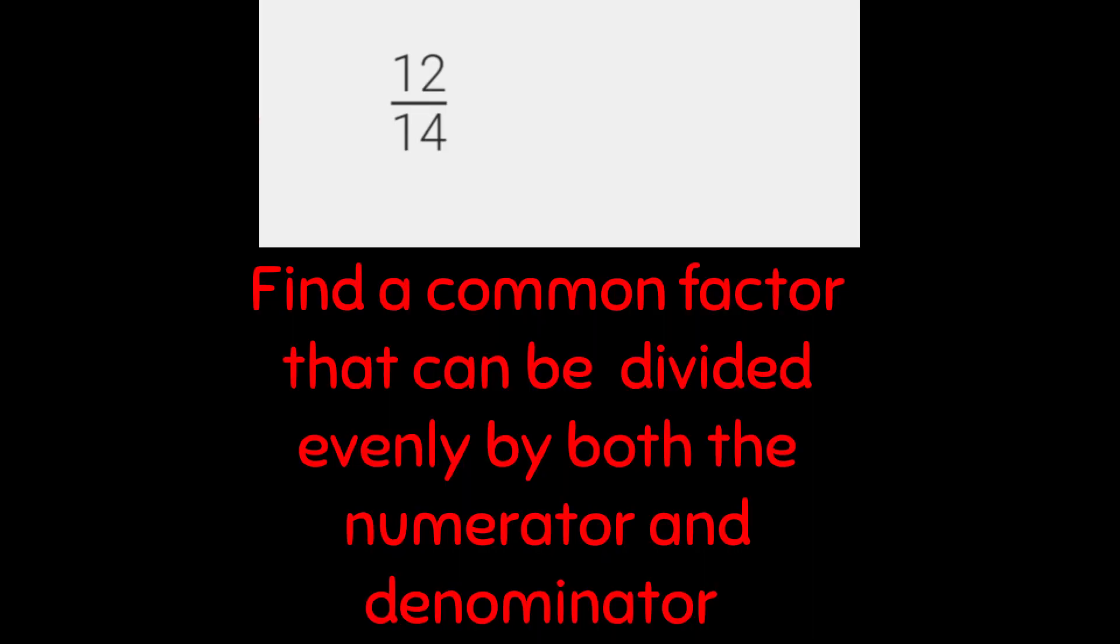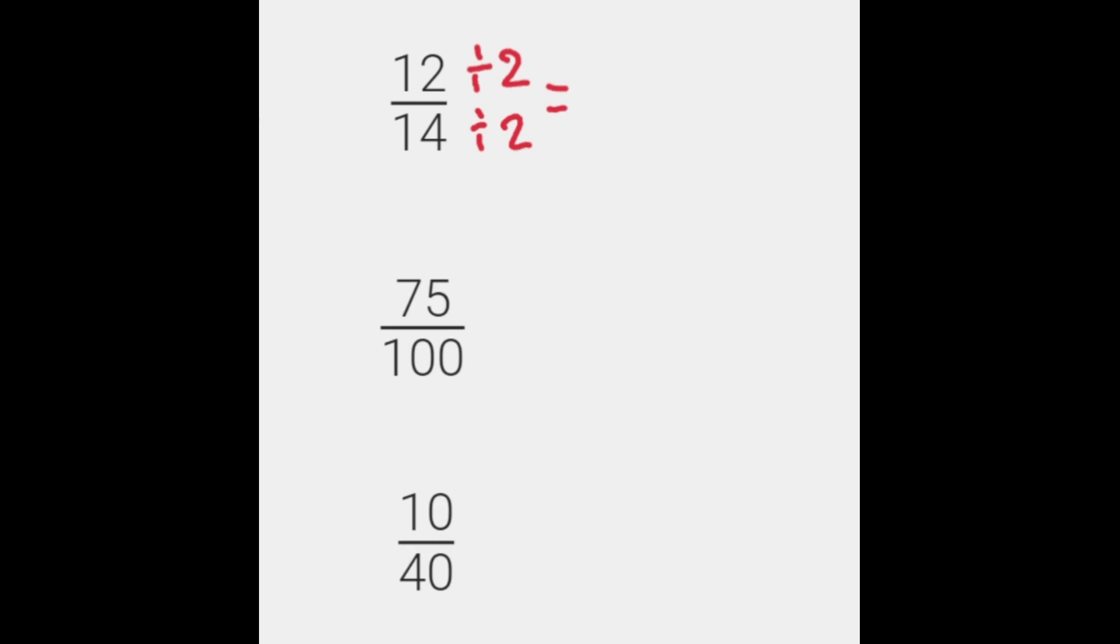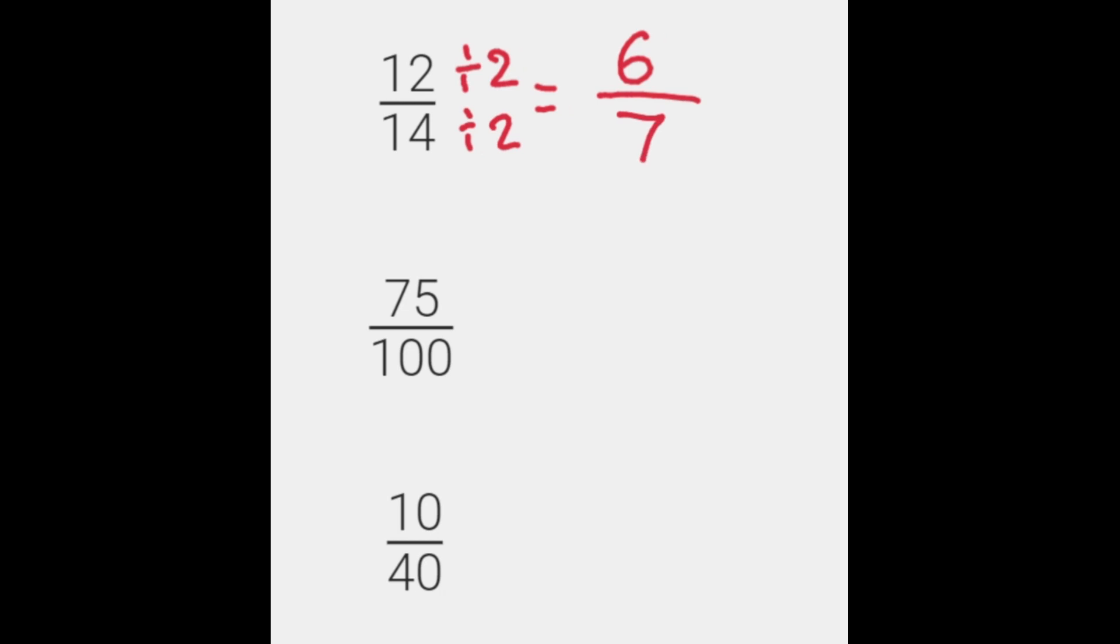So, 12 over 14. We know that we're going to divide that by 2. So whatever you do at the bottom, you do the top. 12 divided by 2 gives us 6, and 14 divided by 2 gives us 7. So 6 over 7 is equivalent to 12 fourteenths.